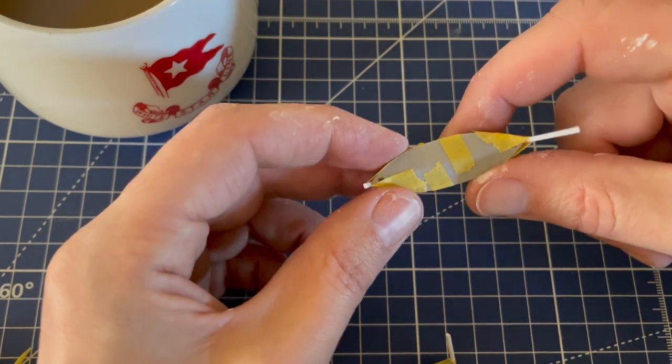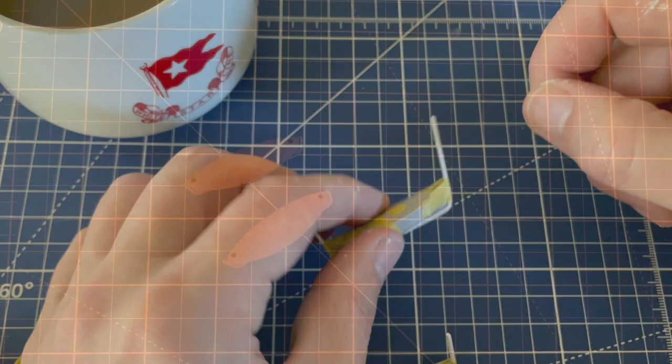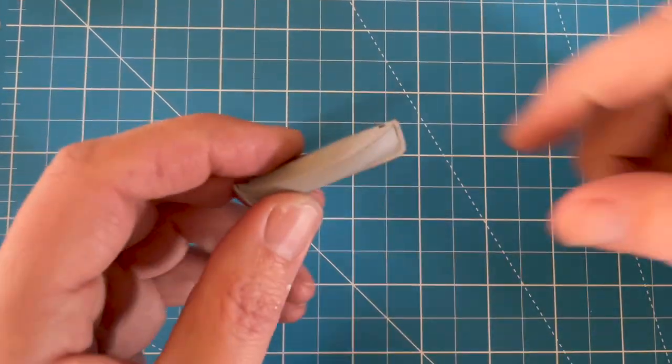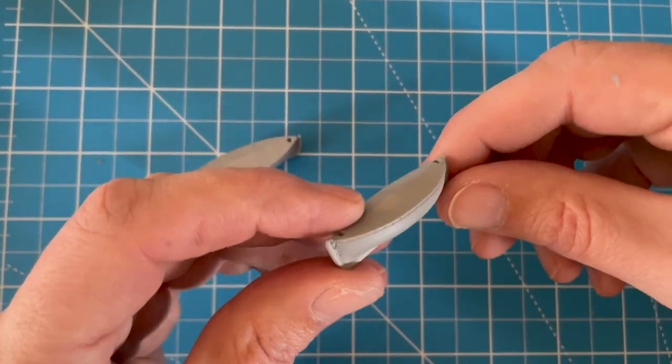Now the primer is nice and dry, really ties everything together and it's looking good. So the next step now we can add some color to the bow.